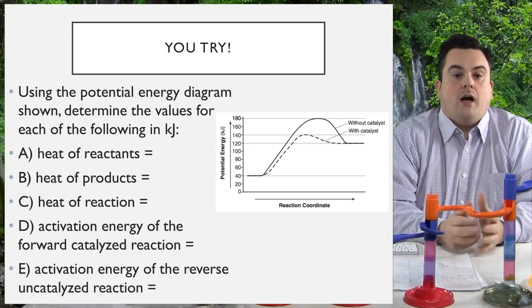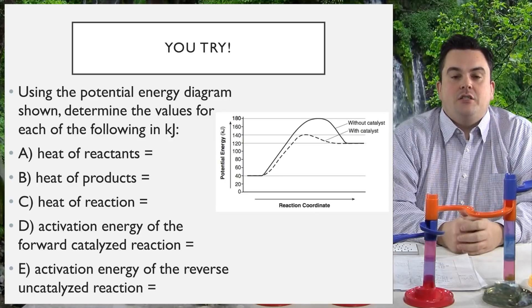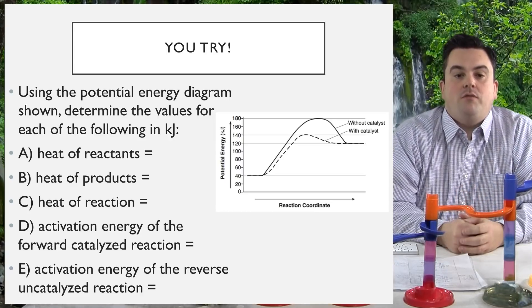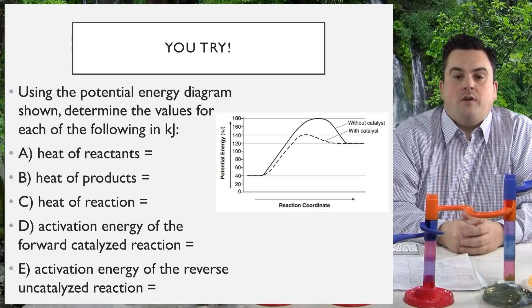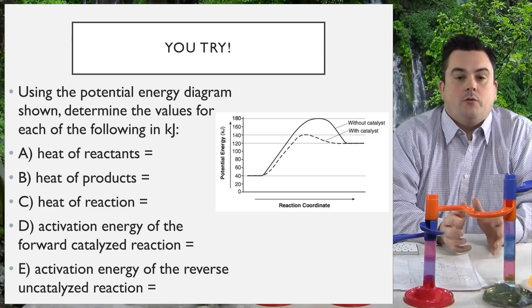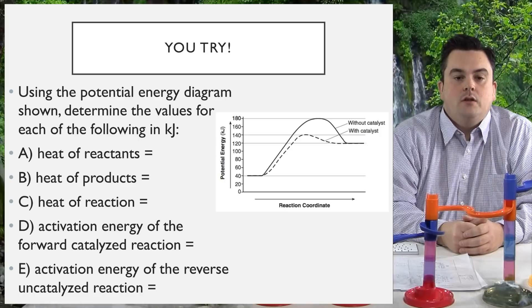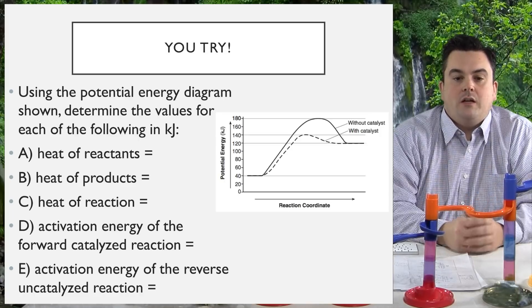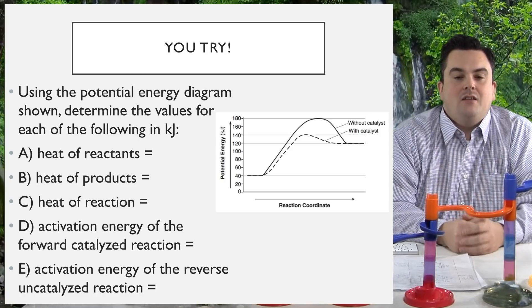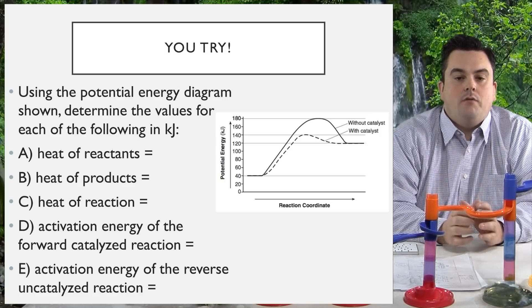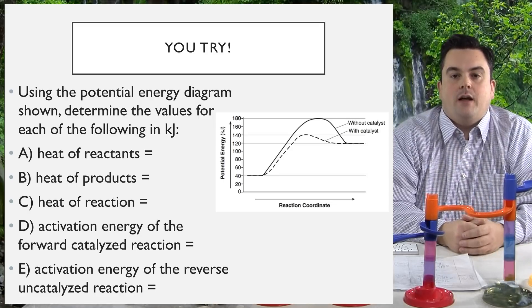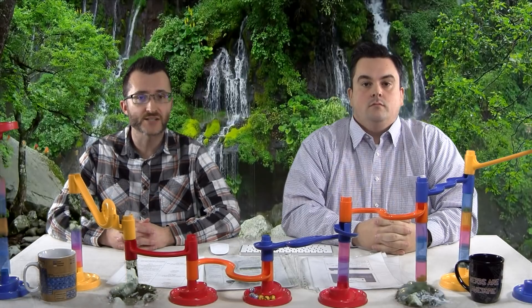You try! Using the potential energy diagram shown, determine the values for each of the following in kilojoules: the heat of the reactants, the heat of the products, heat of reaction, activation energy of the forward catalyzed reaction, and activation energy of the reverse uncatalyzed reaction. Well, that's going to do it for this episode on the role of energy in reactions. Later, nerds!